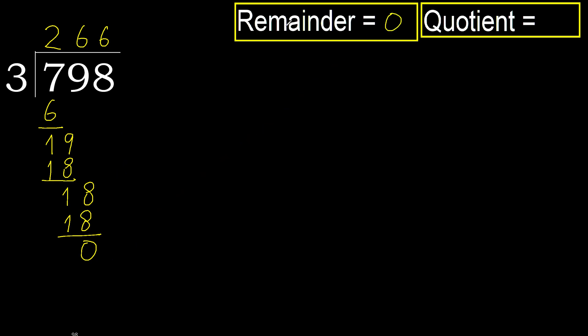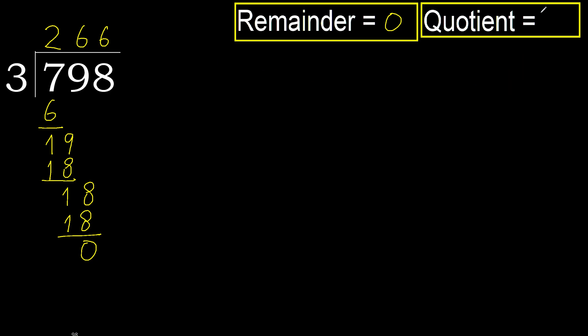Ok, 0. Therefore 798 divided by 3 is here.